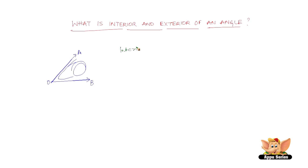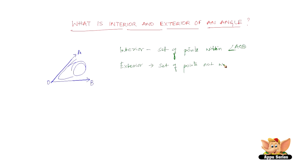Let me just summarize it for you. The interior of an angle is the set of points within angle AOB. The exterior is nothing but the set of points not within angle AOB, or outside angle AOB. So we can say that this is the interior of an angle and this is the exterior of an angle.